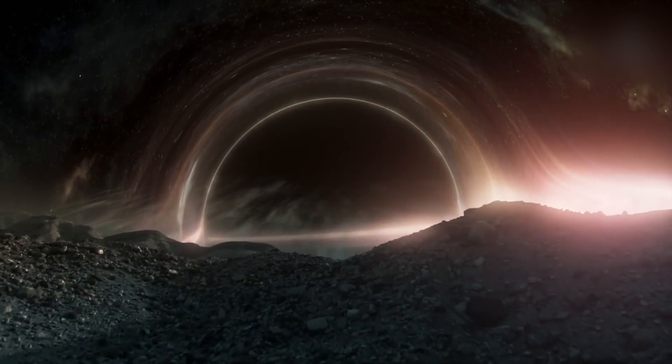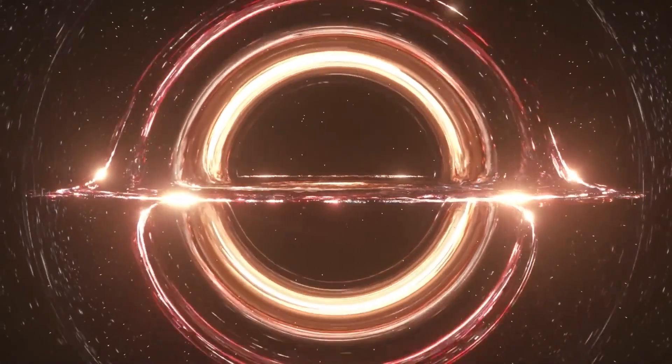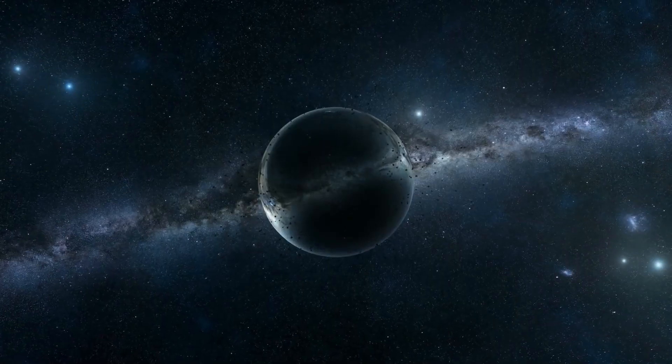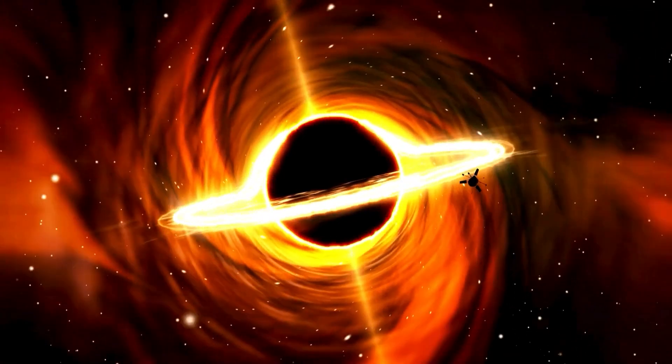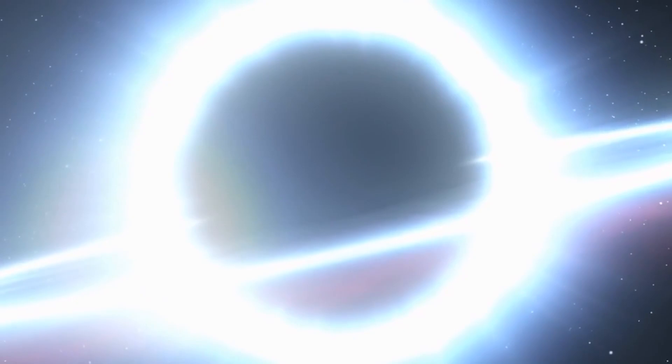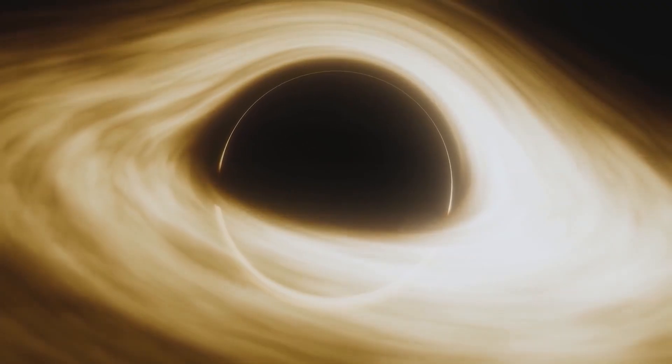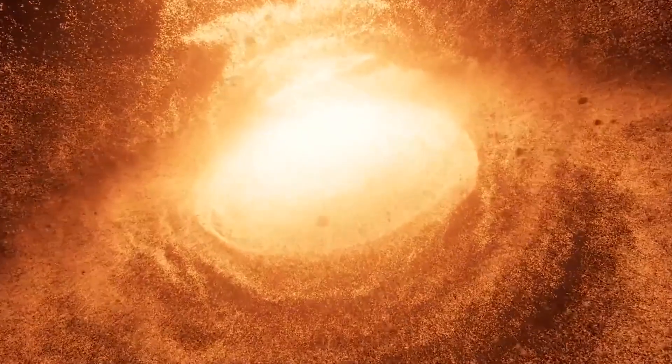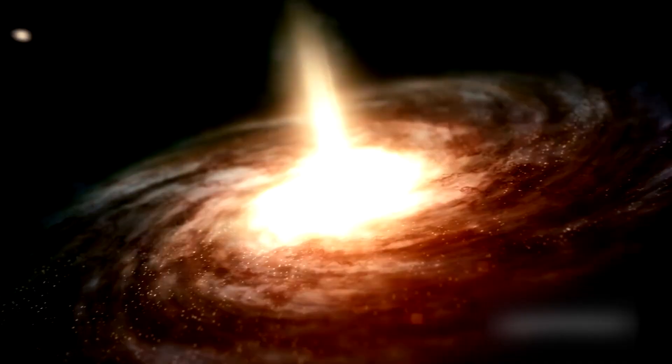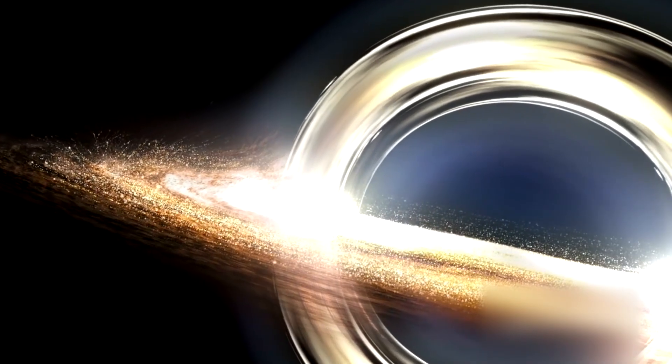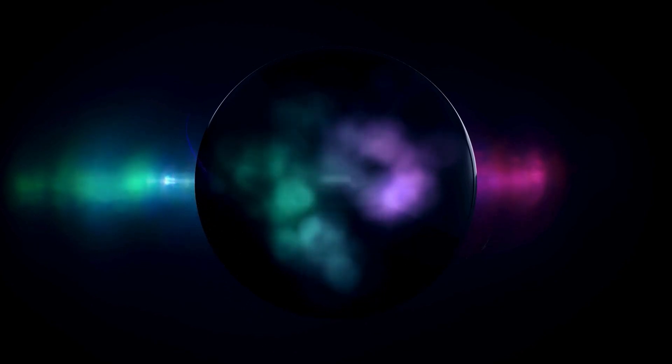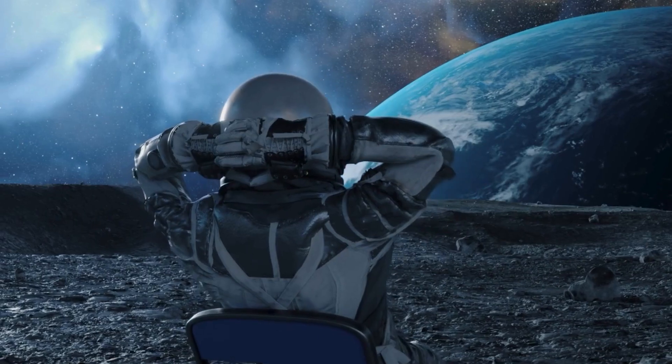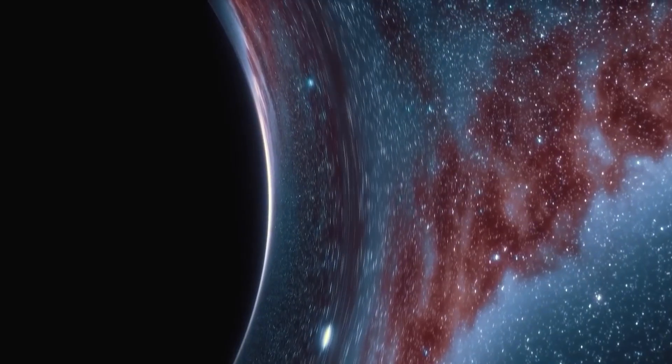The photon sphere of a black hole is a unique place where gravity is so strong that even light, which normally travels in a straight line, begins to orbit the black hole like cars on a roundabout. Can you imagine? This happens because the gravity of a black hole bends space so much that light rays, instead of escaping or falling into the black hole, are forced to follow a circular orbit. If a person were to be on an orbit in the photon sphere and looked ahead, they would see light coming from behind them. In essence, they would see their own back, which seems absurd and impossible in the normal world.